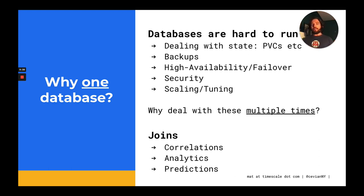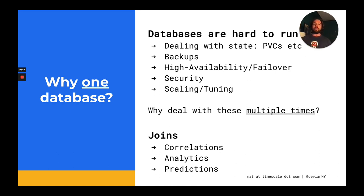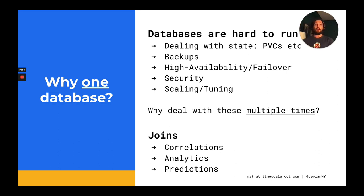The other reason is that having more data inside a single database allows you to use joins to do analysis across these data types. This allows for correlations, more complex analytics, as well as predictions and ML.